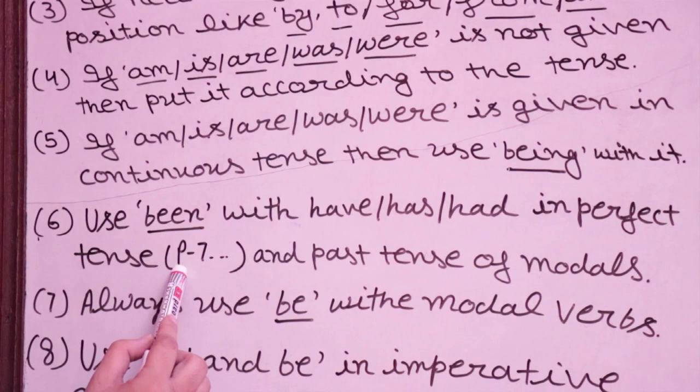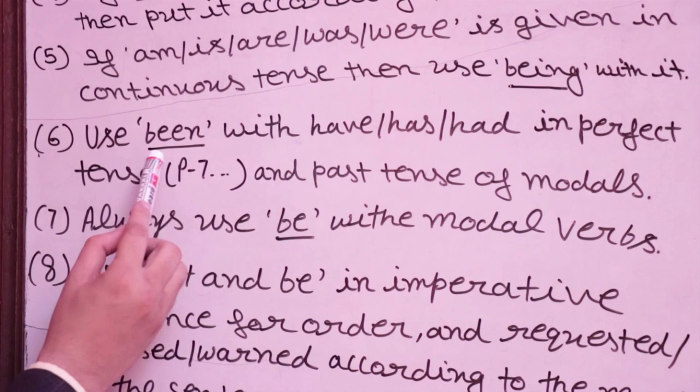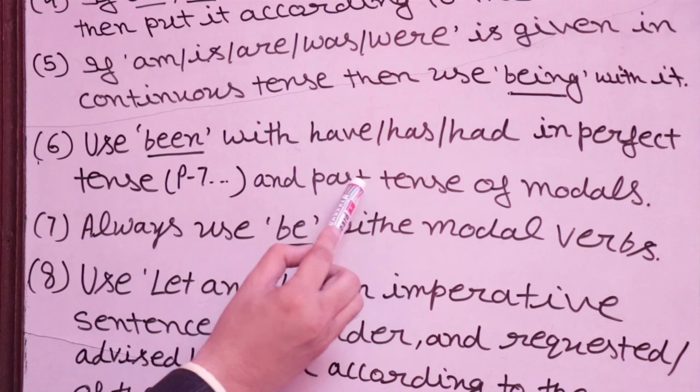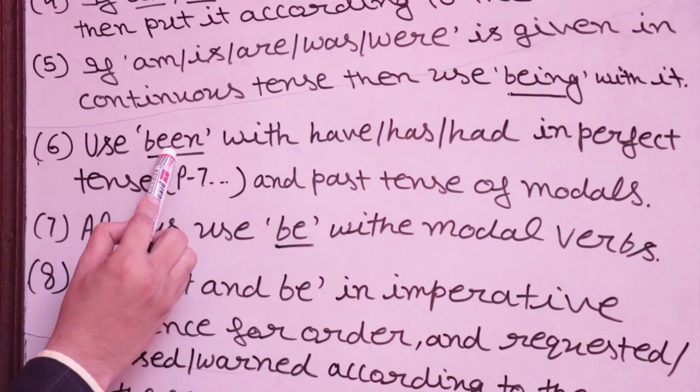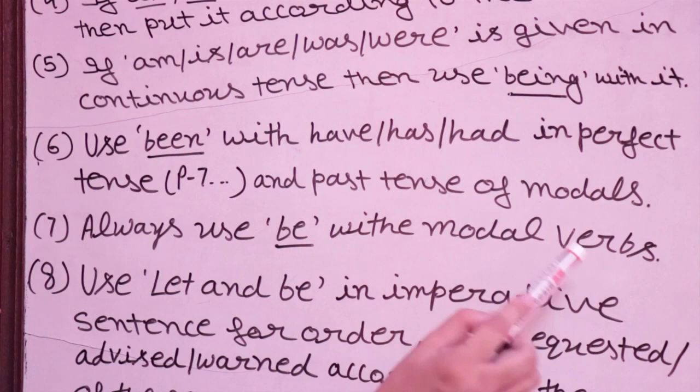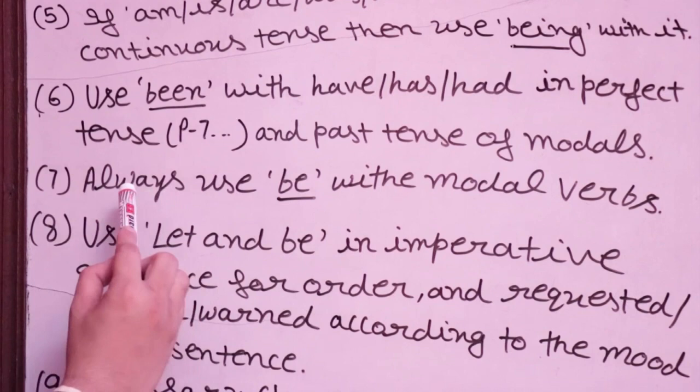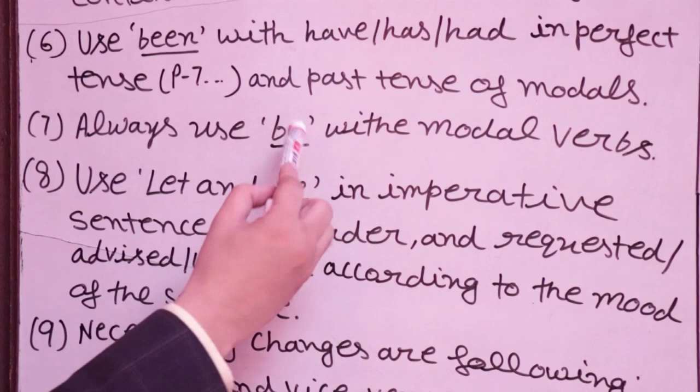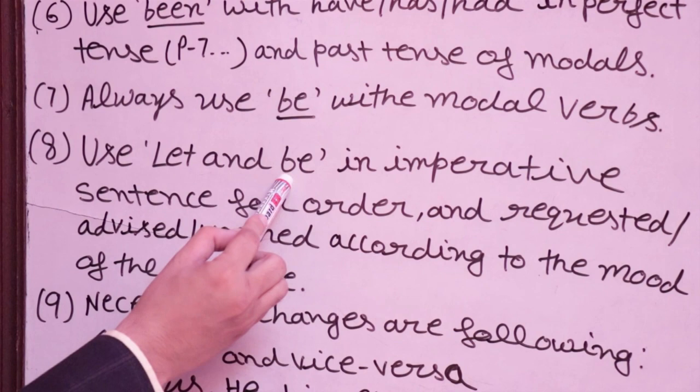Sixth rule: Use 'been' with have/has/had in perfect tenses — present perfect, past perfect, future perfect, and past tense of modals. Wherever have or had is used with the third form, use 'been.' Seventh rule: Always use 'be' with modal verbs. All sixteen modal verbs take 'be' — for example: 'it can be taught,' 'it should be taught.'